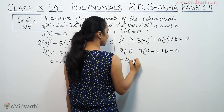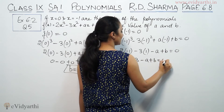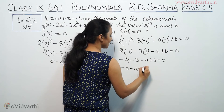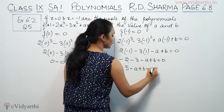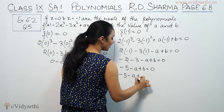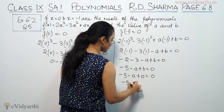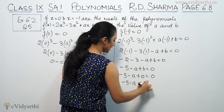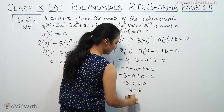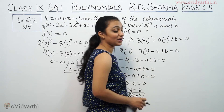So we have minus 2 minus 3 minus a plus b equals 0, which gives minus 5 minus a plus b equals 0. Since b equals 0, this becomes minus 5 minus a equals 0, so a equals minus 5.